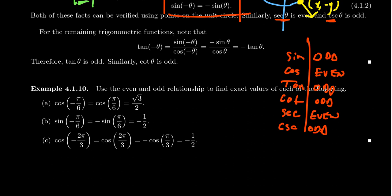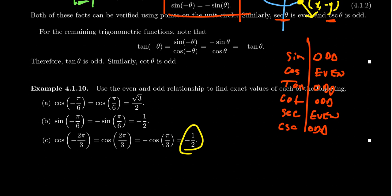For cosine of negative two pi thirds: the symmetry identity lets you erase the negative sign, leaving cosine of two pi thirds. Two pi thirds is in the second quadrant, where cosine is negative. So you get negative cosine of pi thirds — pi thirds is the reference angle. Cosine of pi thirds is one half, so cosine of negative two pi thirds equals negative one half.